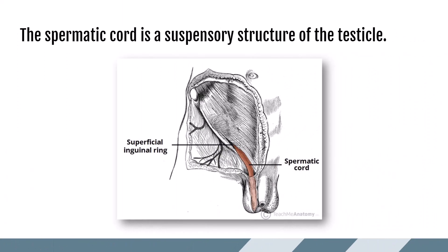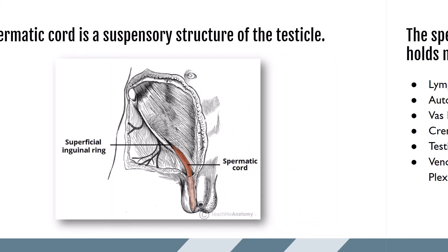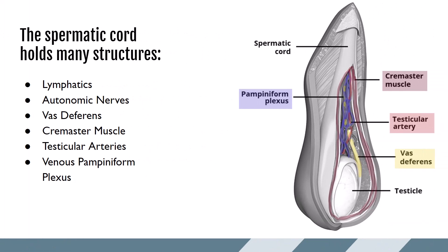The spermatic cord is a suspensory structure of the testicle and serves as a space for things to enter and exit the scrotum. The spermatic cord consists of lymphatic ducts, nerves, the vas deferens, the cremaster muscle, the testicular artery, and the venous pampiniform plexus.